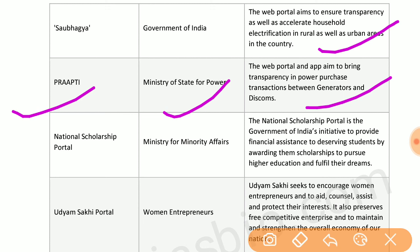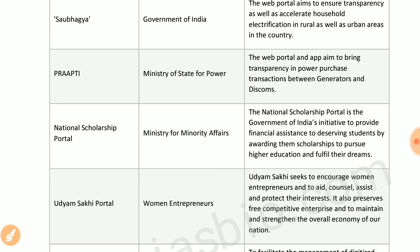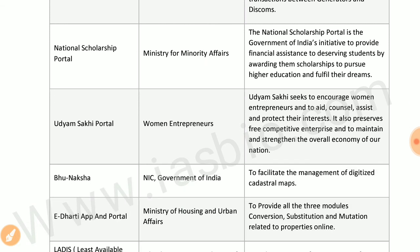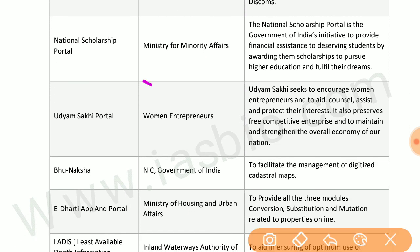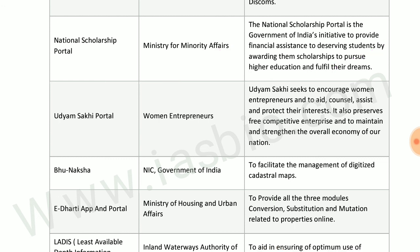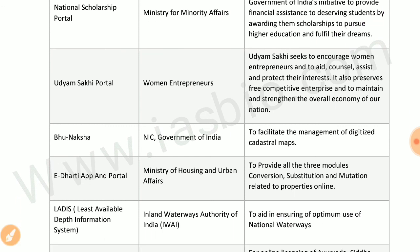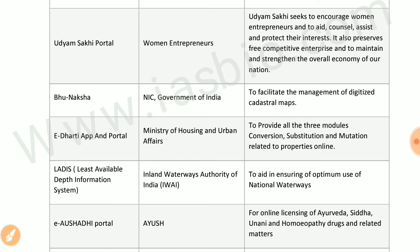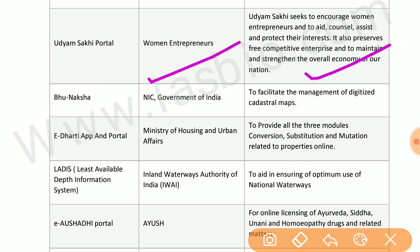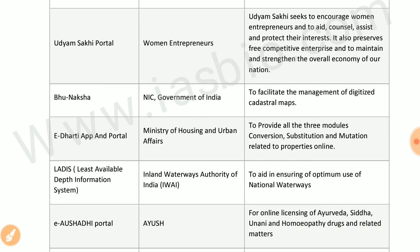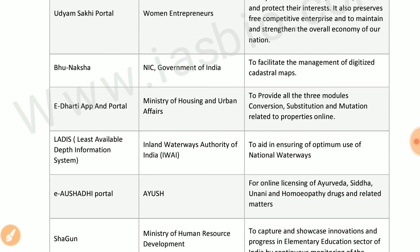PRAAPTI — Payment Ratification and Analysis in Power Procurement for Transparency in Invoicing — by the Ministry of Power brings transparency in power purchase transactions between generators and DISCOMs. National Scholarship Portal by the Ministry of Minority Affairs provides financial assistance to deserving students by awarding scholarships to pursue higher education. Odiam Sakshi portal by and for women entrepreneurs encourages and assists women entrepreneurs and protects their interests.